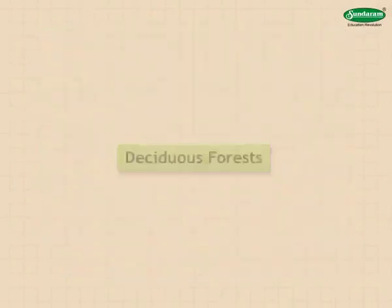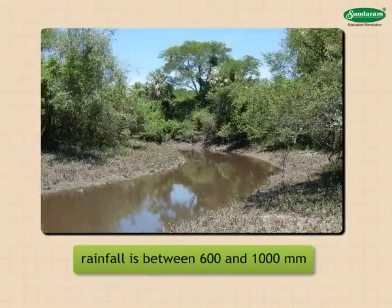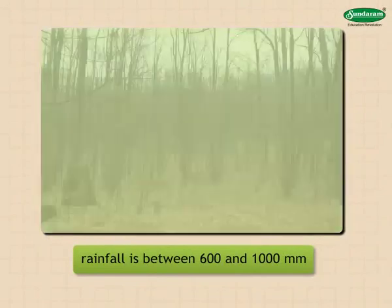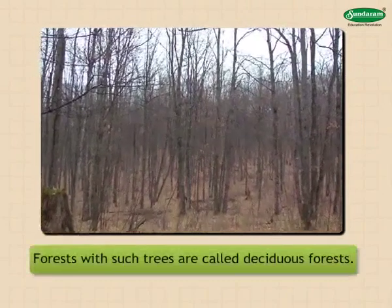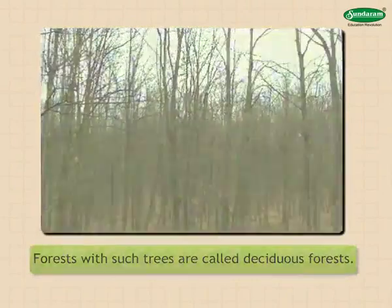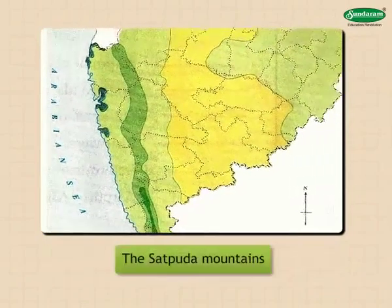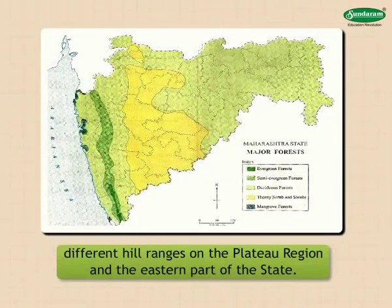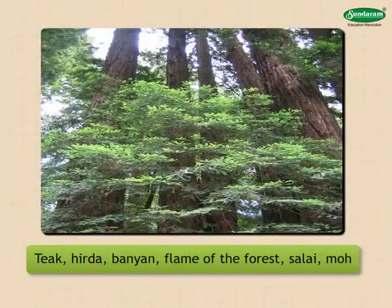Deciduous forests: in the area where rainfall is between 600 and 1000 mm and the availability of water is limited, almost all trees shed their leaves in a specific season. Forests with such trees are called deciduous forests. These are seen in the low rainfall region — in Konkan, the eastern slopes of the Sahyadri mountains, the Satpura mountains, different hill ranges on the plateau region, and the eastern part of the state. Teak, hirida, banyan, Flame of the Forest, salai, moh, etc. are the trees found in these forests, which occupy much of the forest area of the state.